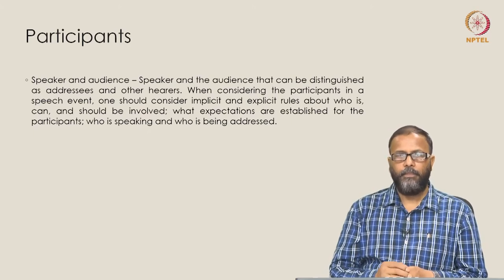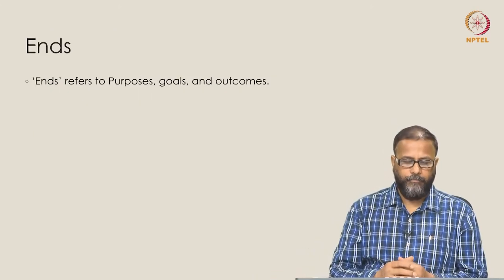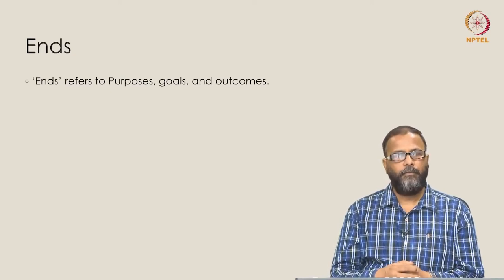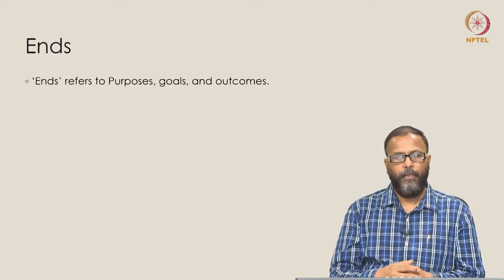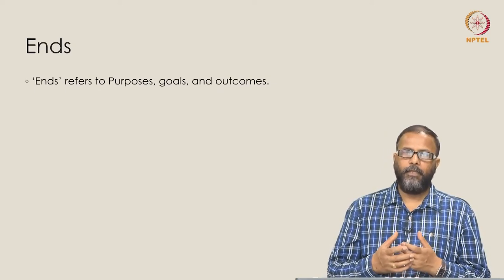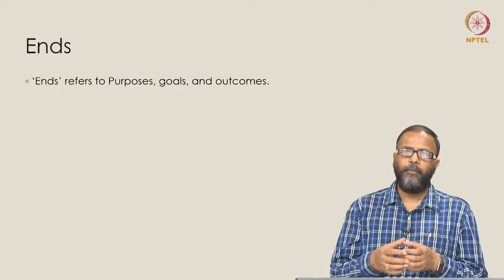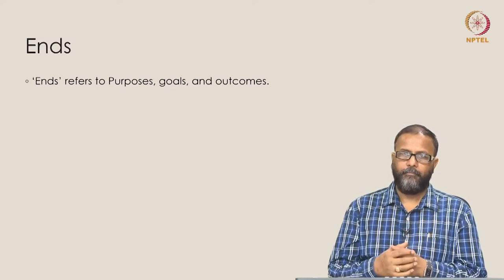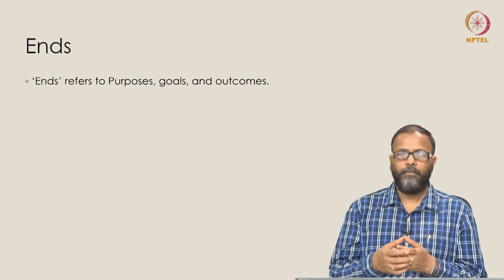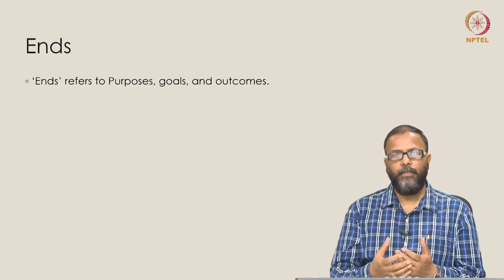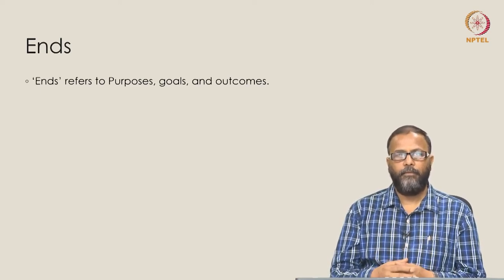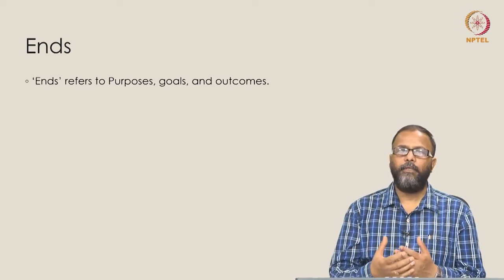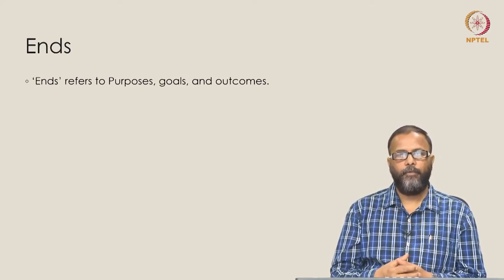Moving on to the third element, E, which stands for ends. What is the purpose of this speech event? What is the goal? What is the outcome? Any communicative speech event has a defined purpose, a definite goal, and entails a definite outcome. These goals, purposes, and outcomes are called ends in this model — why are we talking, what is the goal of this interaction or speech event, and what is the ultimate outcome of it.